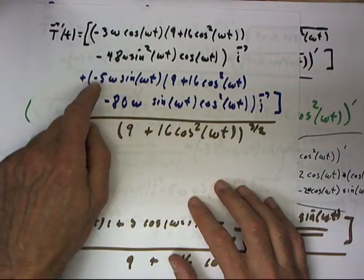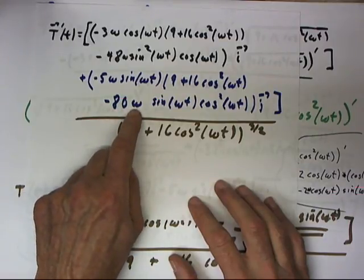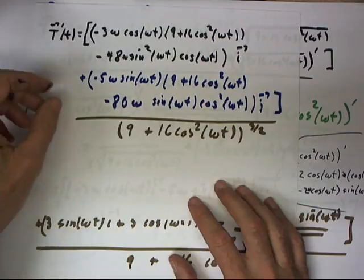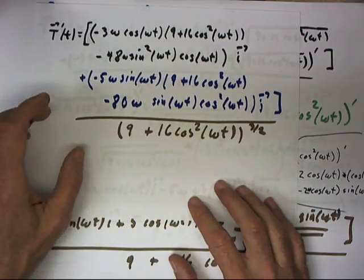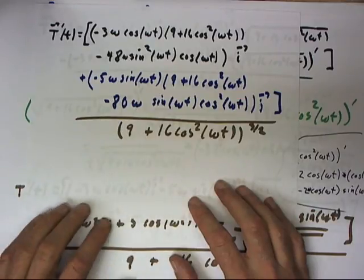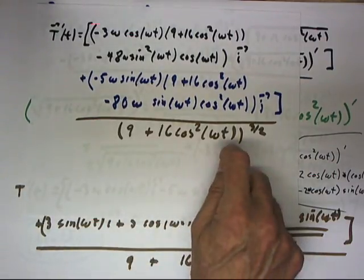But the numbers here actually have units of position over units of time. So, the 3 and the 48 and the 5 and the 80 would have appropriate dimensions which when multiplied by the radian per second dimension of omega would give us, for example, meters per second squared, the dimensions of acceleration. So, I can just say the denominator is dimensionless.